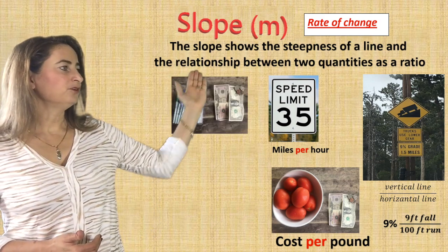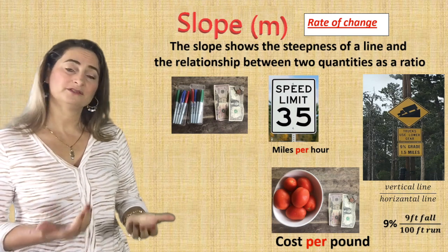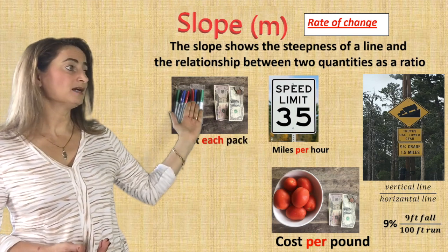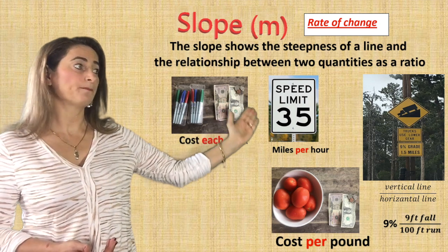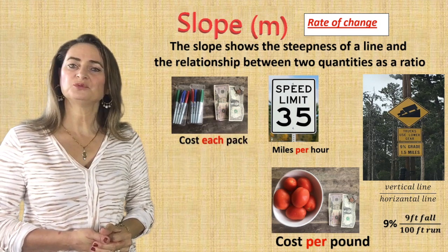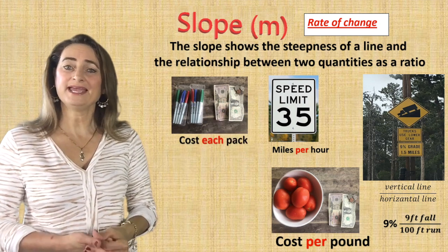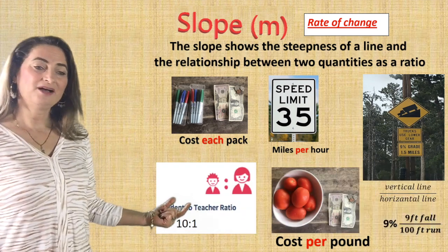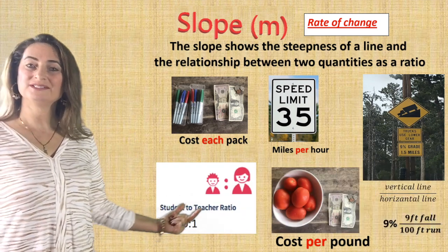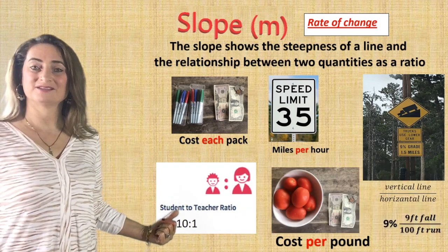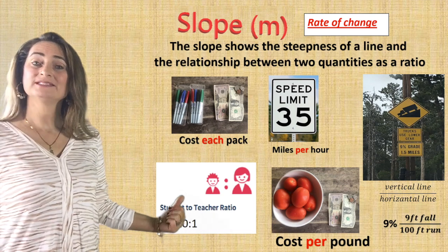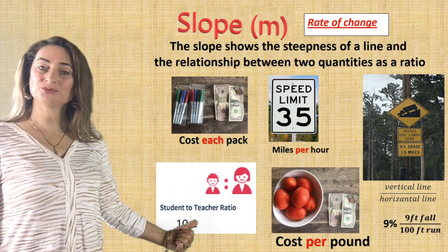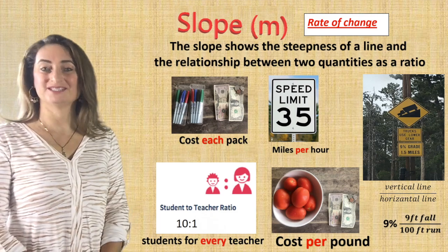If you buy packs of markers, the cost per pack shows the relationship between the cost and the number of packs of markers. Now the student-teacher ratio — we write that as a ratio, 10 to 1, which means 10 students for every one teacher.